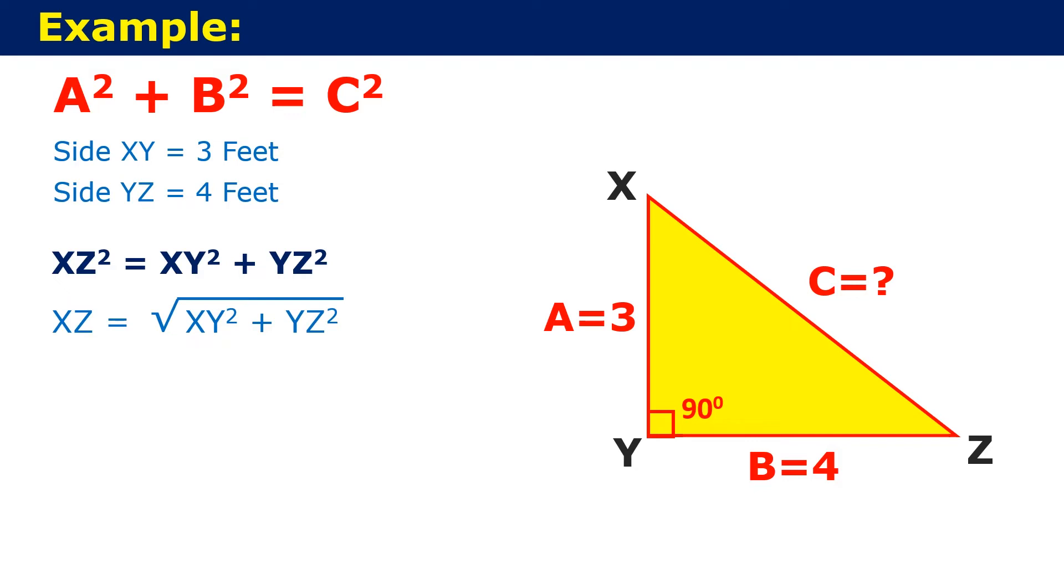Now, substituting the values of XY and YZ in the above equation, we get XZ is equal to under root of 3 square plus 4 square. Which can be written as, XZ is equal to under root of 3 square which becomes 9 and 4 square which becomes 16. XZ is equal to under root of 25 which is equal to 5 feet. Now, let us observe how we can use this method to do a layout in construction work.